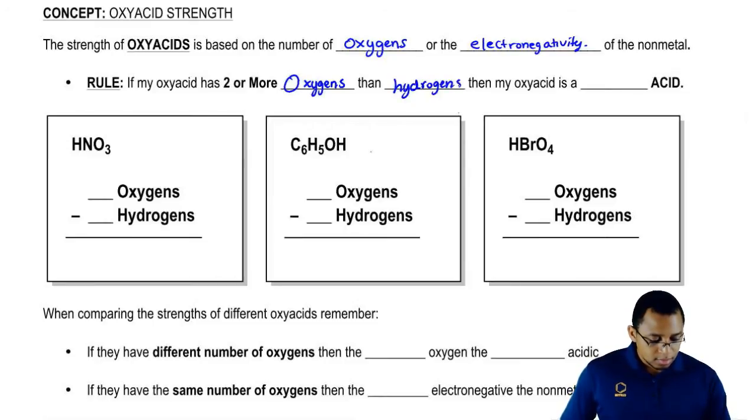So you always want a minimum of two more oxygens than hydrogens. If you don't have that minimum, then you won't be a strong oxyacid.